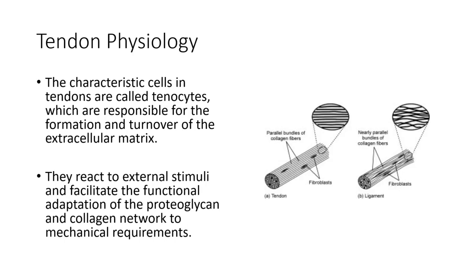Tendons and ligaments are compositionally almost exactly the same — their orientation is a little different and there are slight differences in exact percentages, but they're made up of basically the same constituents. The key cell in tendons are tenocytes, referred to almost as tendon-specific fibroblasts. They're responsible for turnover and maintenance of the ECM.